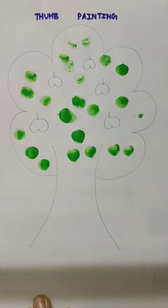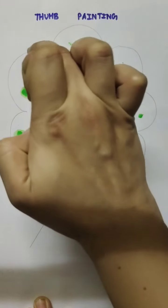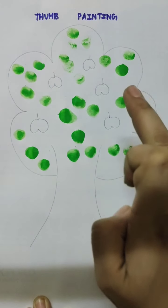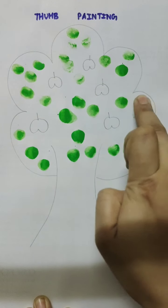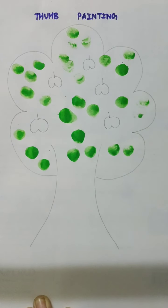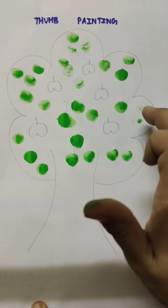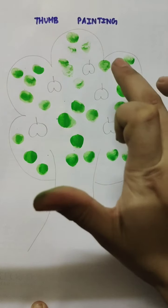So like this, by dipping your thumb and mixing a little amount of water, you can paint it. The above ones, can you see children, are coming very clear. All my fingerprints and thumbprints are coming clear where the water is less. Wherever the water is more, the fingerprints will not be that clear.